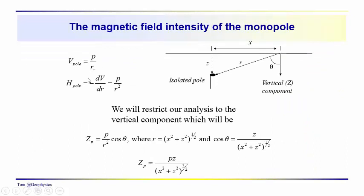So the field intensity then, we know that in order to get the intensity, we have the potential. The field intensity is just the negative derivative of the potential, and that gives us p over r squared. We're after the vertical component here, so we're going to take the cosine of theta, multiply that times p over r squared in order to get the vertical component of the magnetic field intensity associated with this isolated pole.